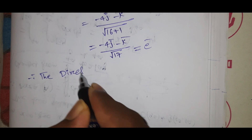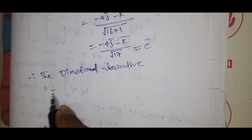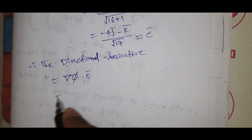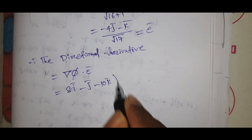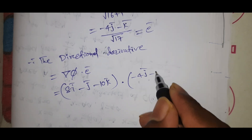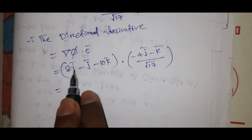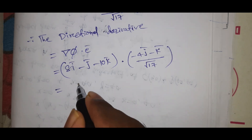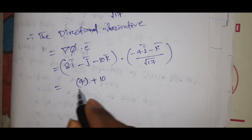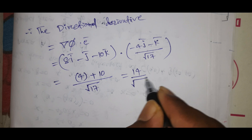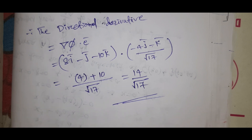Therefore the directional derivative equals ∇φ · ê = (8i - j - 10k) · (-4j - k) / √17. Since i·j = 0 and i·k = 0, we get: j·j = 1 giving (-1)(-4) = 4, and k·k = 1 giving (-10)(-1) = 10. So the result is (4 + 10) / √17 = 14/√17. This is the answer. If you have any doubts please comment, subscribe to my channel, and don't forget to like and share. Thank you everyone.